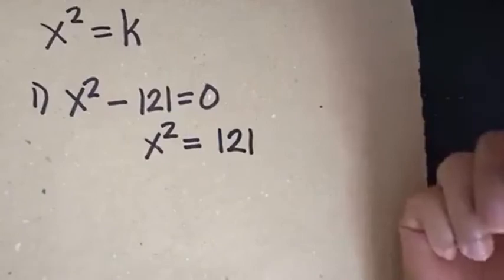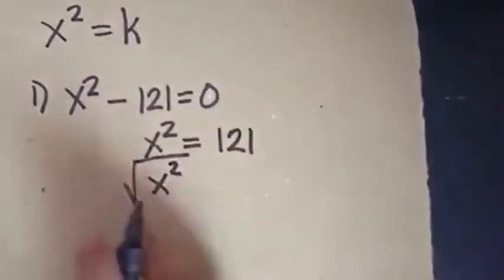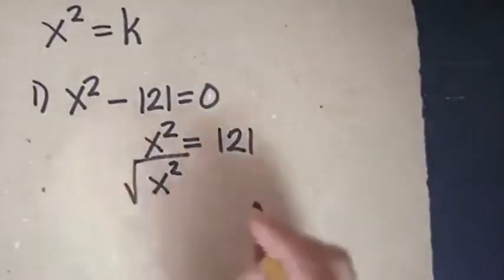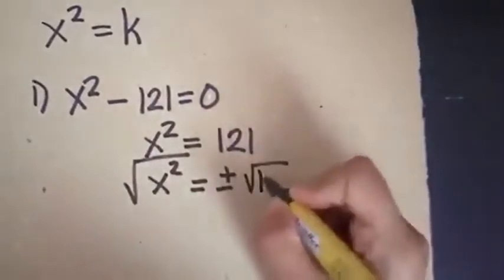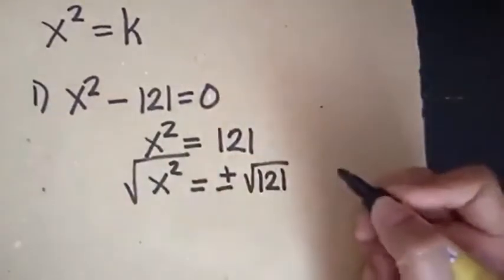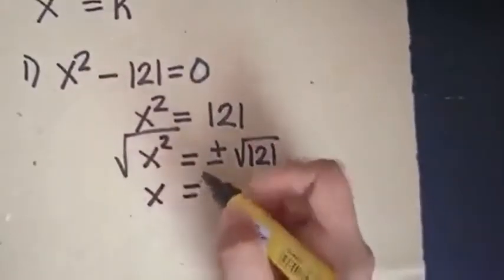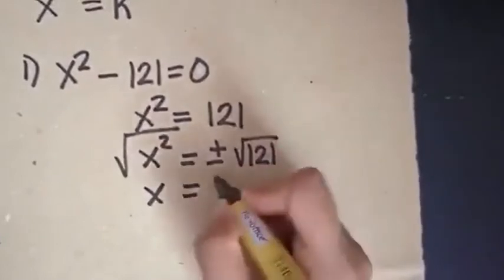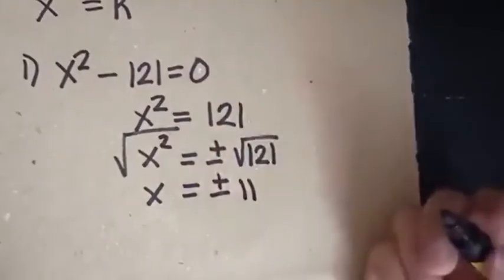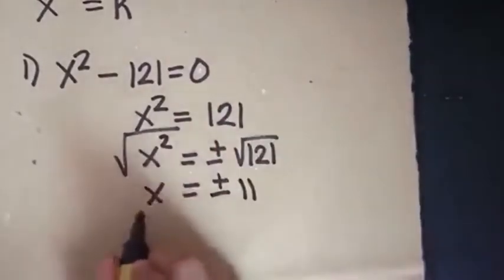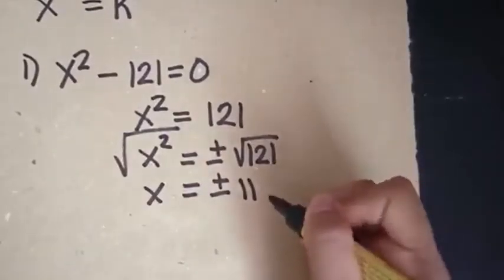Next, we extract the square root. So we have the square root of x squared equals plus and minus the square root of 121. Therefore, x equals plus and minus 11.